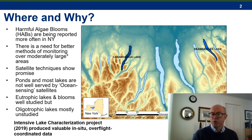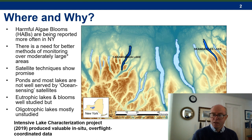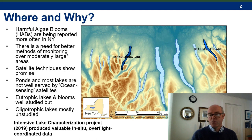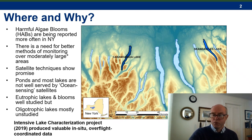Eutrophic lakes and blooms like those in Lake Erie and Lake Okeechobee are well studied, but oligotrophic lakes are mostly unstudied, mainly due to very low concentrations of chlorophyll A and accessory pigments like phycocyanin, and therefore a poor signal-to-noise ratio in remote sensing images.